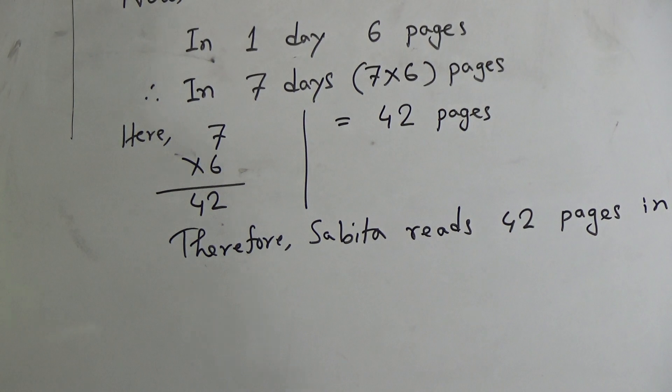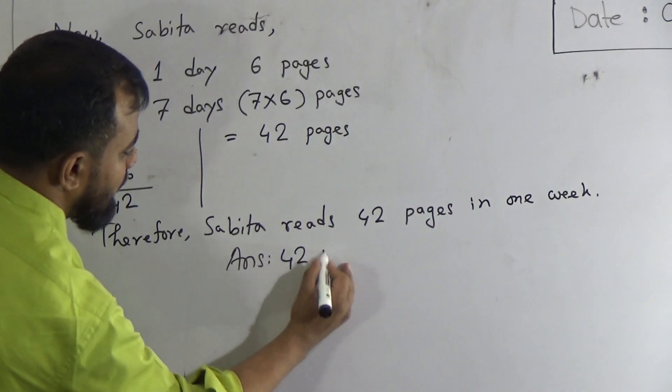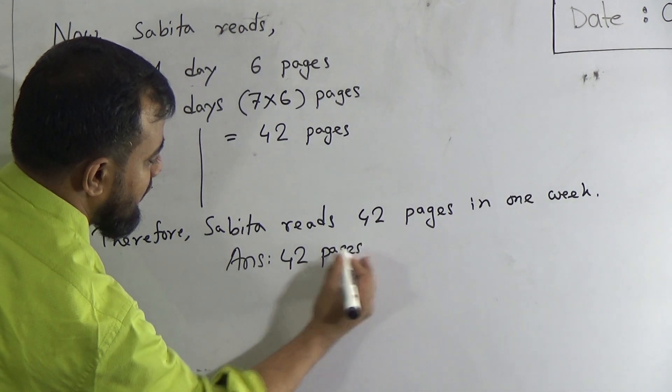7 days means in 1 week. But we need to write down in words there. Sabitha reads 42 pages in 1 week. The answer will be 42 pages. 42 pages.